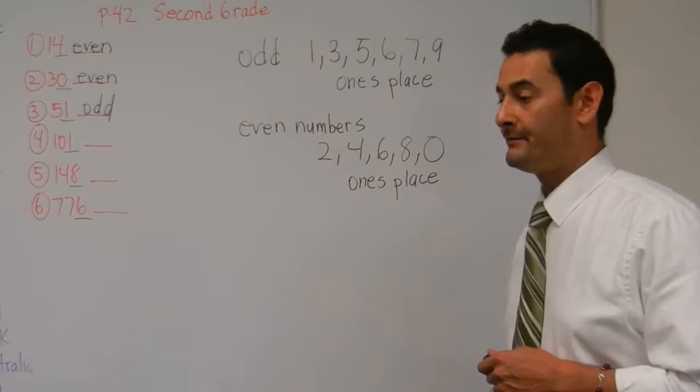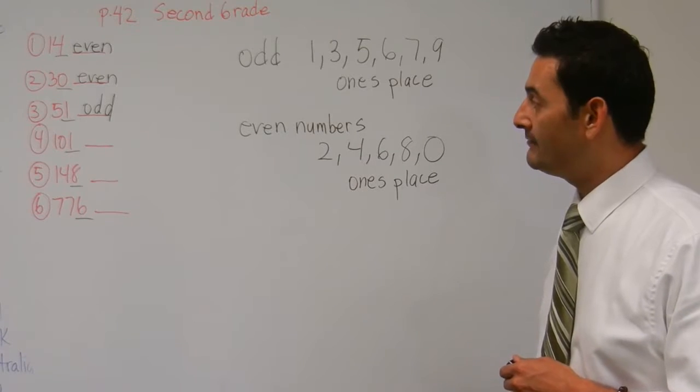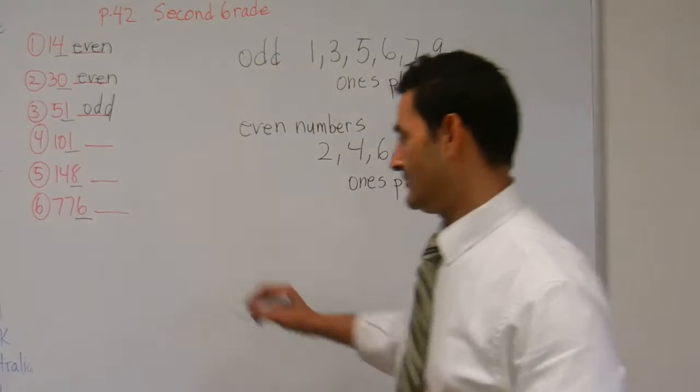101 for number 4. We have a 1 in the ones place. Is that an odd number or an even number? That is also an odd number. That is correct.